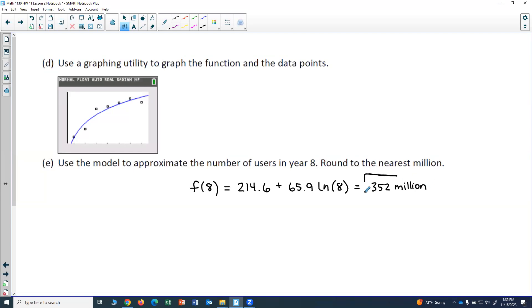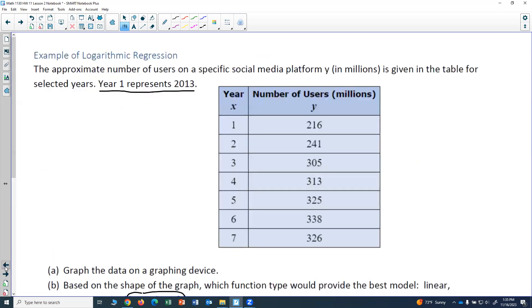And again it's already in millions because my original data that I used to get the model said it was in millions. So we're predicting in year eight, which is not on this table, we would have 352. And that seems quite plausible given the values of y in the table.